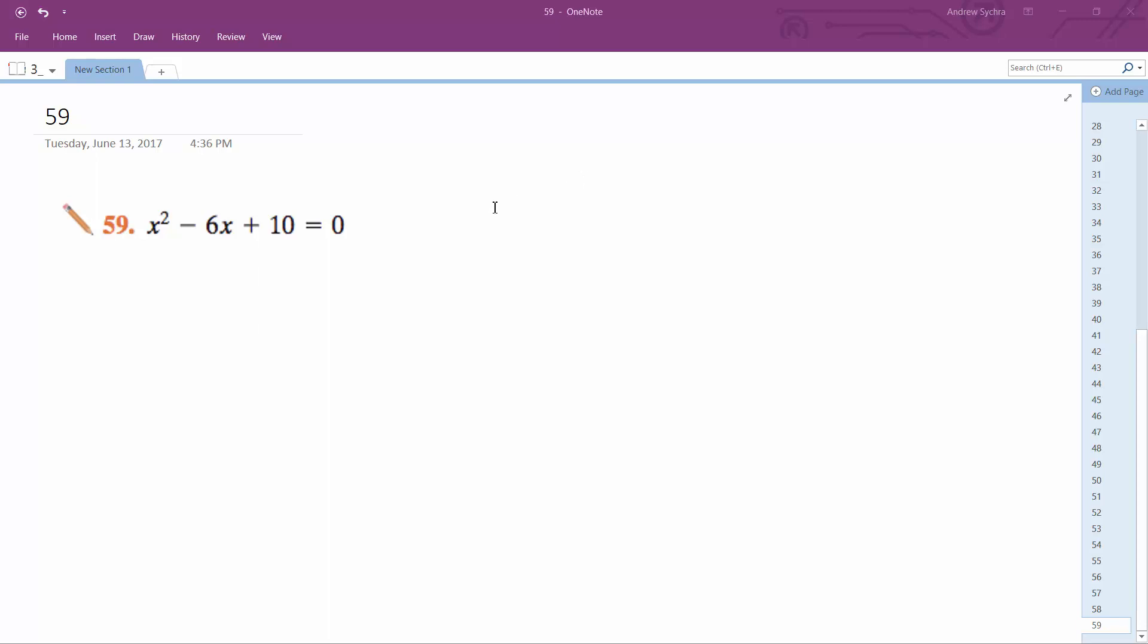We're going to solve this problem using the quadratic formula. So opposite of b plus or minus square root of b squared minus 4ac all over 2a.